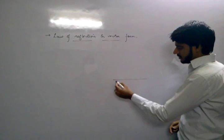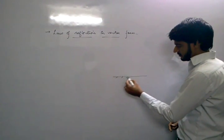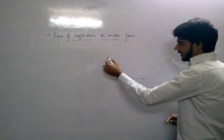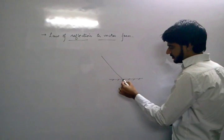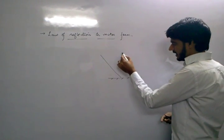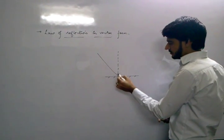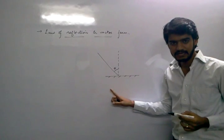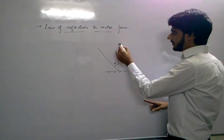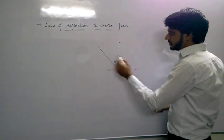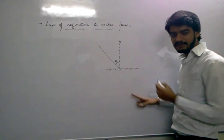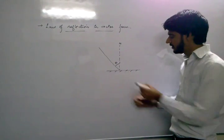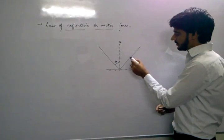Suppose this is a plane mirror. Consider this as a plane mirror and the ray is incident at an angle, say theta. The ray is incident at an angle theta. This is the normal. This is the incident ray, and obviously it will be reflected according to the law of reflection — it will be reflected at an angle theta.